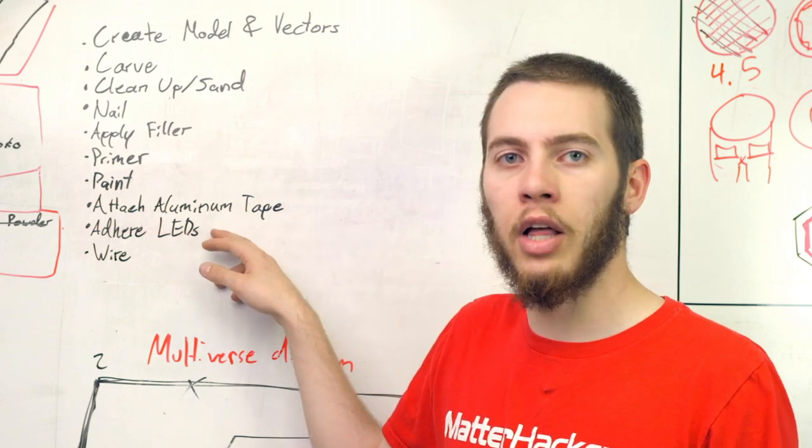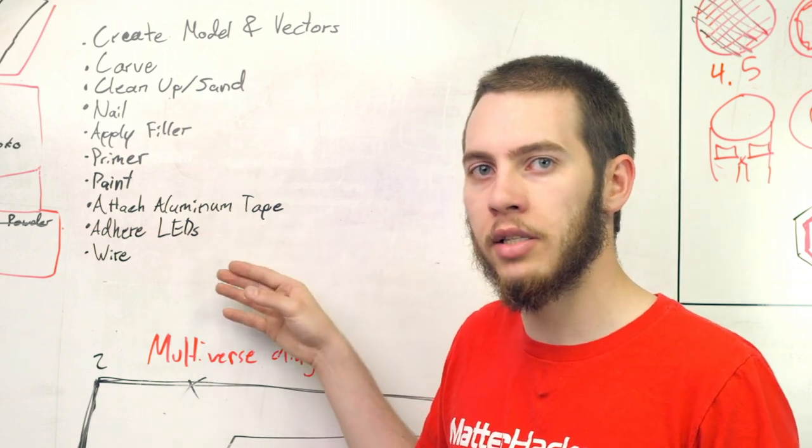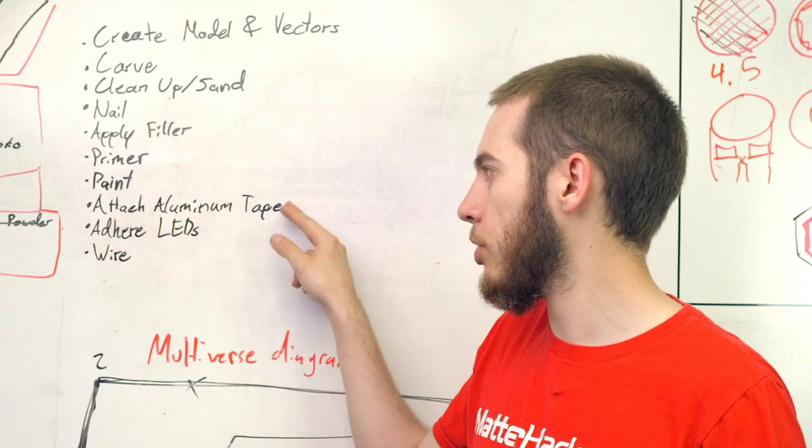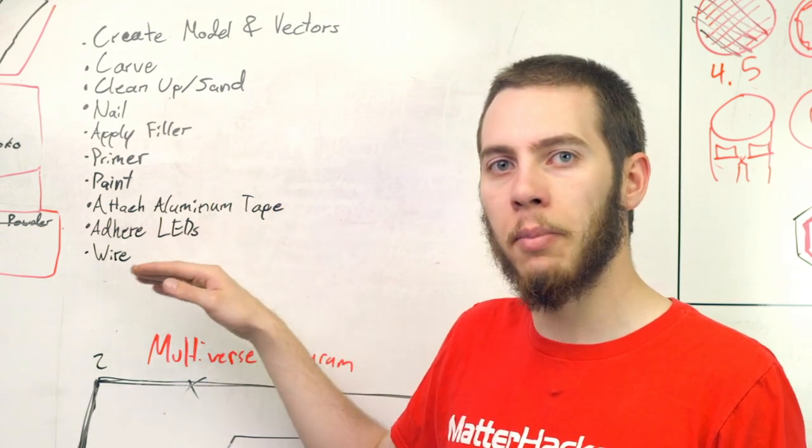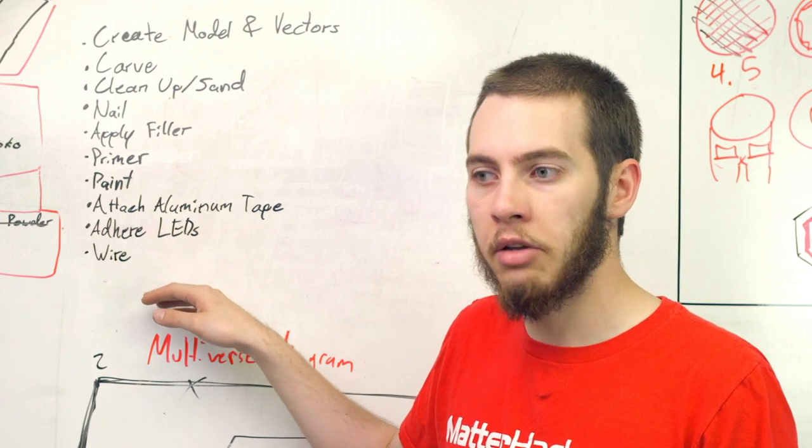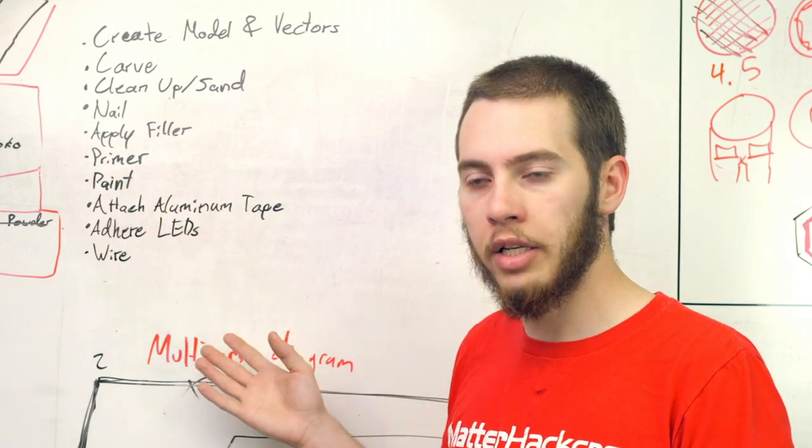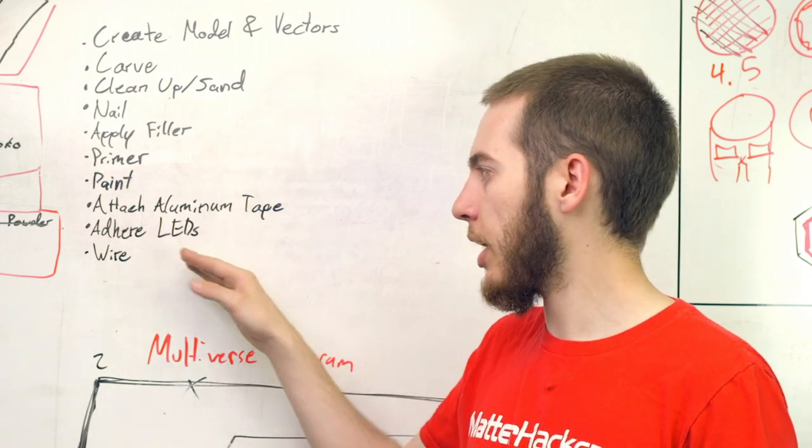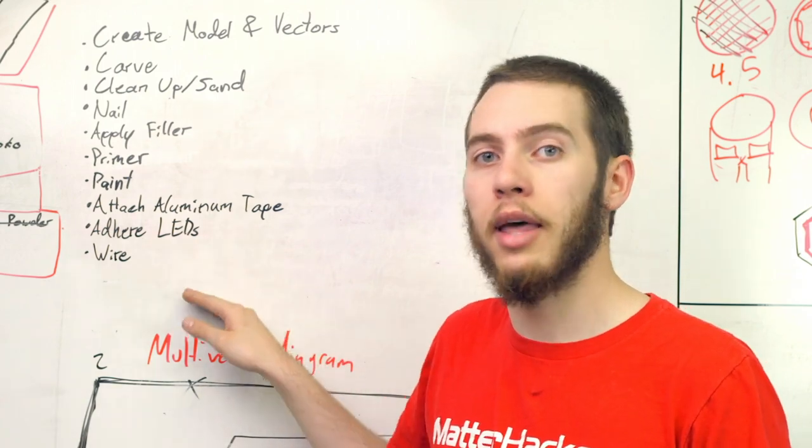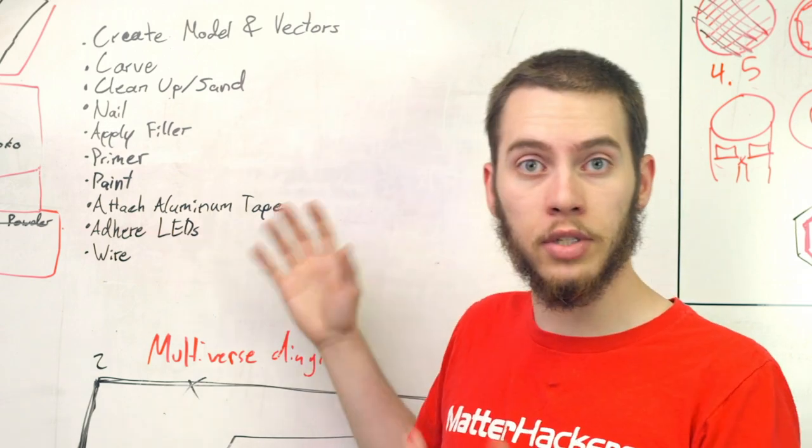And then we'll adhere the LEDs just to the aluminum tape. I've already tested the LED adhesive, and it's strong enough to hold on to the aluminum tape. And once that goes on, I just need to wire everything up in series since I'm using a NeoPixel-like LED system. I need to make sure that everything goes together in series so that it actually follows a continuous path. But once all that's done, so is the sign.